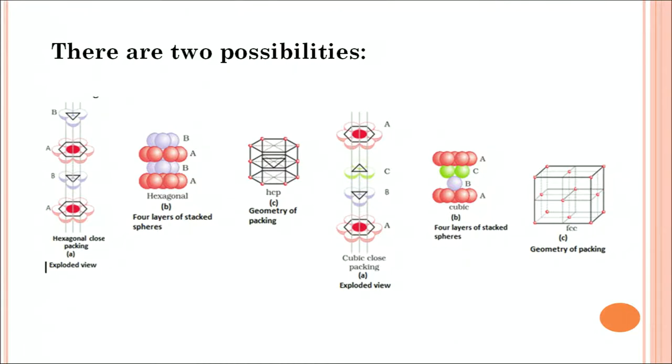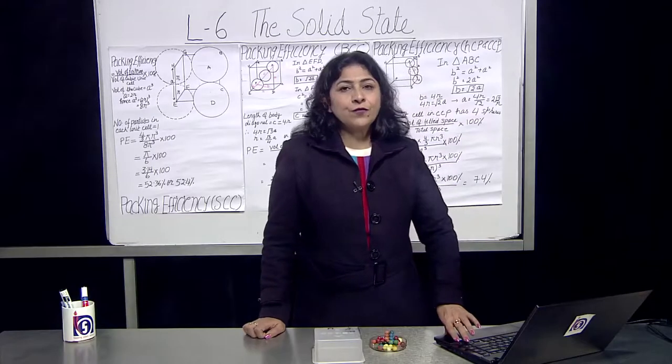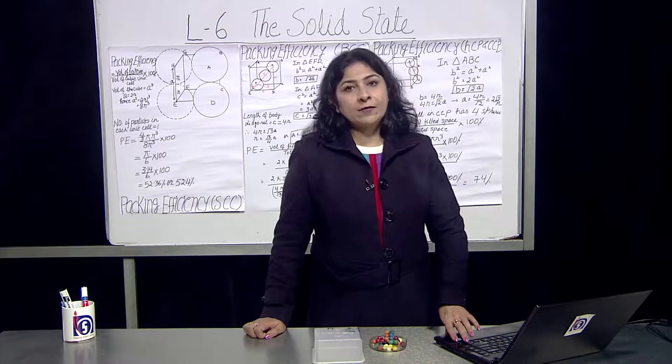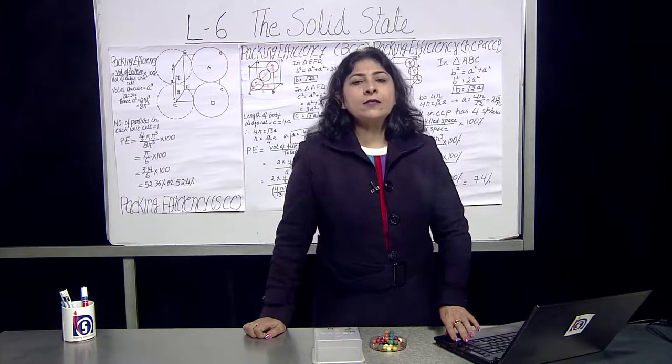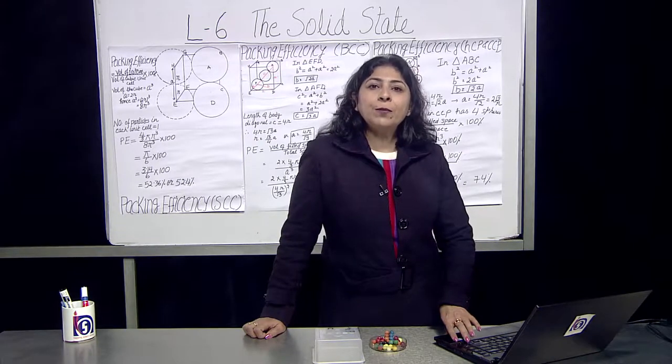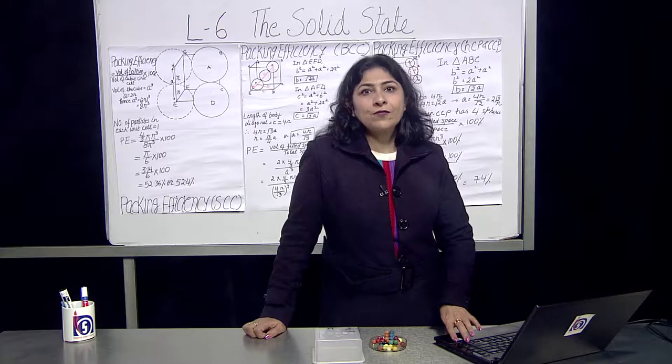We get the four layer stacked sphere. The geometry of the packing you will find is different over there and in the solid state as we know the particles should be very closely packed. So void should be lesser. If the void is lesser, it means packing is good, packing is more. That will be the perfect solid phase we can say.